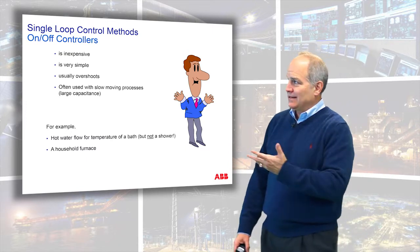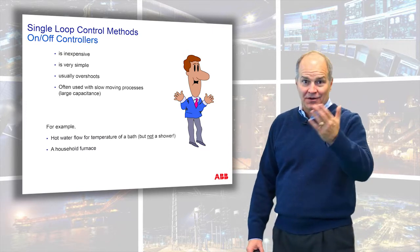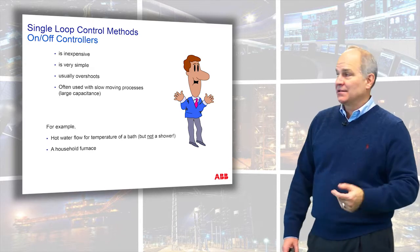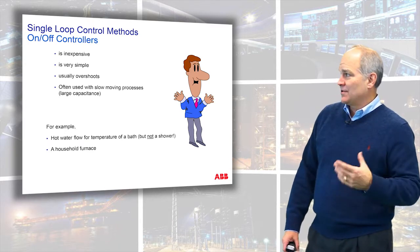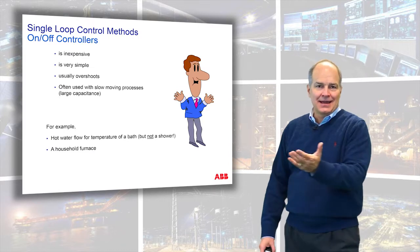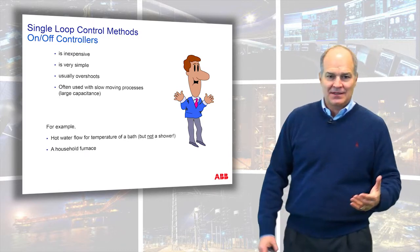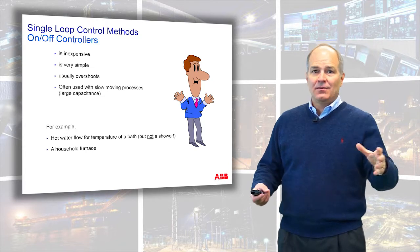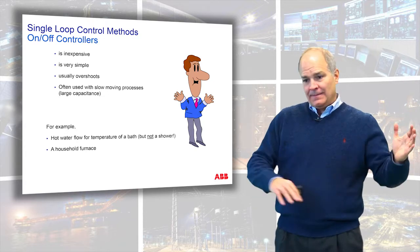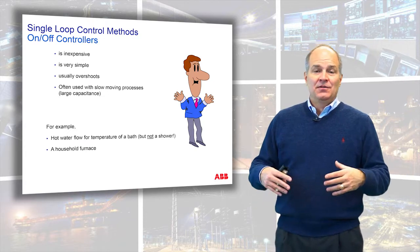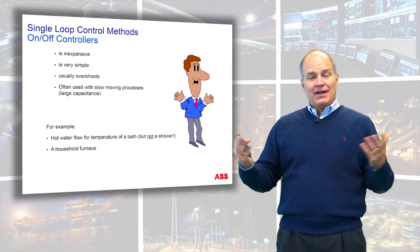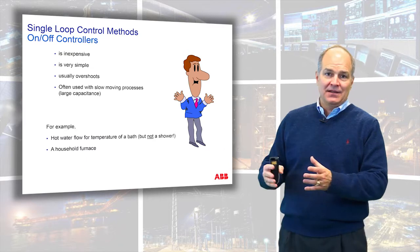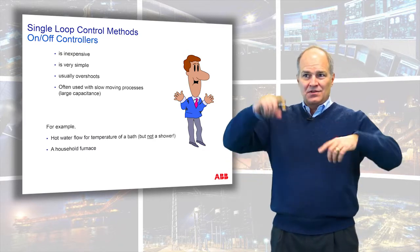Things about on-off control: it's inexpensive and simple — it's either on or off. It will overshoot or have an oscillation, and it's designed for slow-moving processes. An example is a bathtub: if you want to raise the temperature you turn the hot water on full blast then turn it off. In a shower that wouldn't work well because there's no capacity. So on-off has a place in large systems where deviation from the reference is allowed.